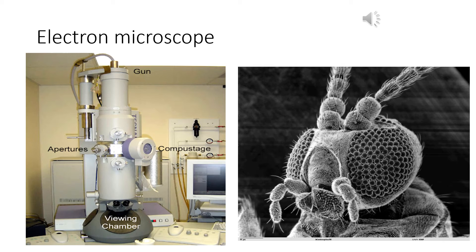A compound microscope can magnify an object up to a maximum of about 2,000 times, but an electron microscope can magnify the object up to 200,000 times. On the right side, there is a picture of the mouthpart of an insect — a scanned image through an electron microscope. Very minute details can be seen in the electron microscope image.